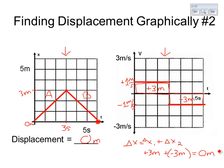It still works. Finding the area of a velocity versus time graph still gives us displacement, whether we're moving forwards or backwards or doing different things.